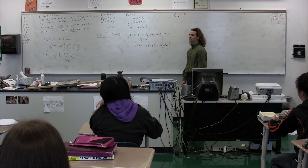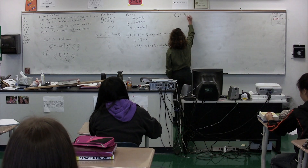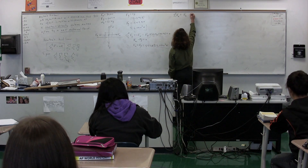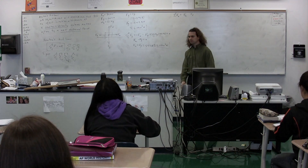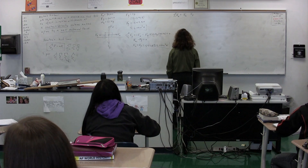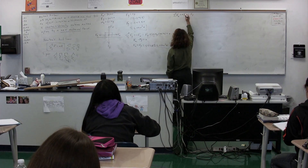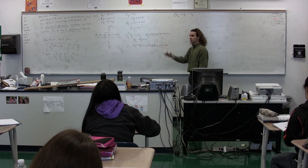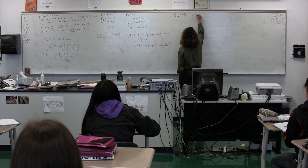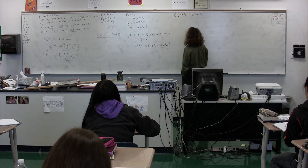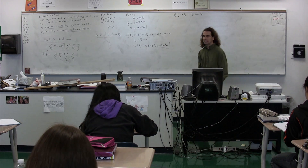The forces in the x direction are the force applied and the force of friction. The force applied is positive and the force of friction is negative, because the force of friction is to the left and the force applied is to the right. That is equal to mass times the acceleration in the x direction, because we're summing the forces in the x direction.